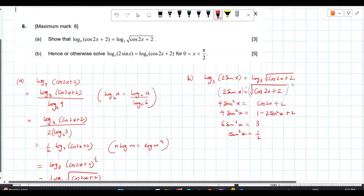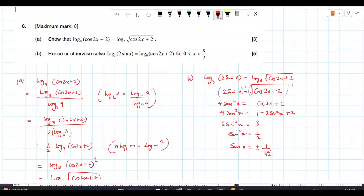So, sin x is equal to plus or minus 1 over root 2. You take the square on the other side as square root. Now, since x is in the first quadrant. Yeah, that was 0 to pi by 2.